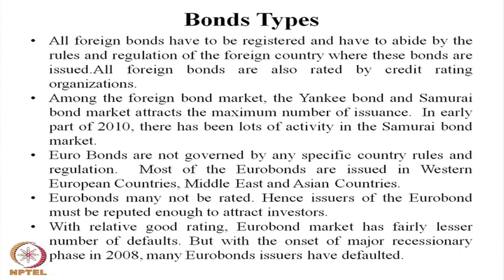All foreign bonds have to be registered and must abide by the rules and regulations of the foreign country where these bonds are issued. All foreign bonds are also rated by rating agencies. Bonds issued as Yankee bonds in the US need to abide by the Securities Exchange Commission of the US. Similarly, bonds issued in the Australian market — Kangaroo bonds — need to be registered as per Australian regulation practices. All these bonds are issued, rated by rating agencies, listed, and traded as per the guidelines of the respective country.